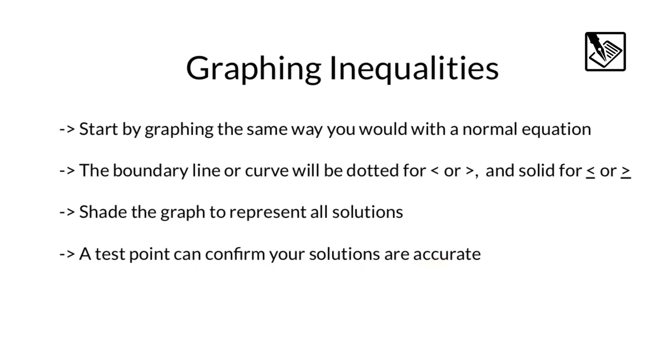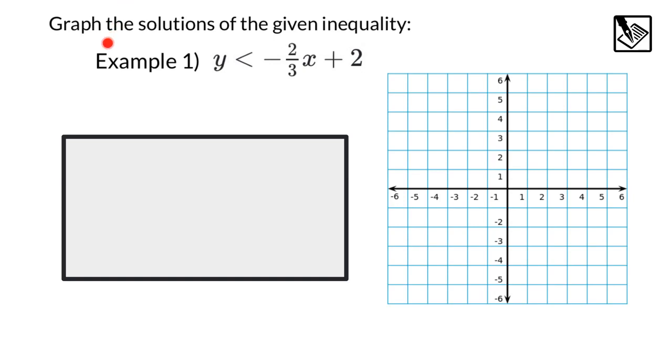Let's move on to an example. Here it says, graph the solutions of the given inequality, and for our first example, we've got y is less than negative two-thirds x plus two. So let's graph this like we normally would. But in this case, we have a y intercept at two. And then we have a negative two-thirds slope. So that's going to be down two over three. So we'll have another point right there.